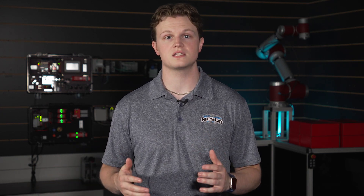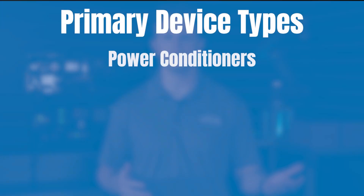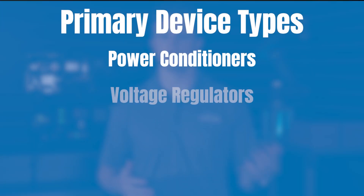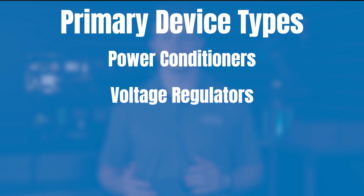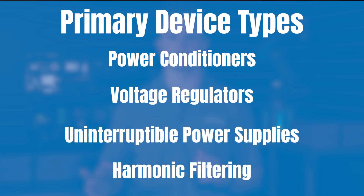While there is no one-fit solution, dirty power can be converted to clean power using devices such as power conditioners, voltage regulators, uninterruptible power supplies, and harmonic filtering, depending on the root cause.